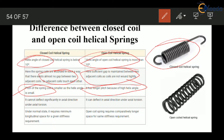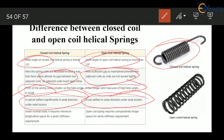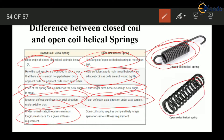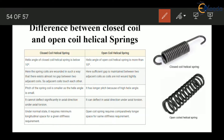Due to the small gap, when torsion is applied the axial deformation is small in closed coil helical spring, while in open coil springs there is large axial deformation due to the application of torque. Because of the small gap and small helix angle, the total length of the closed coil spring is small, while for open coil springs the total length is very large. These are the main differences between closed coil and open coil helical springs.